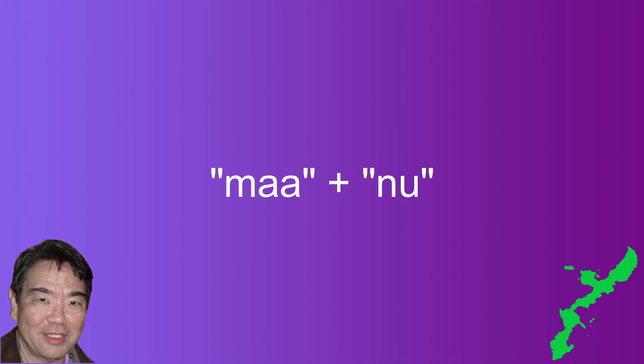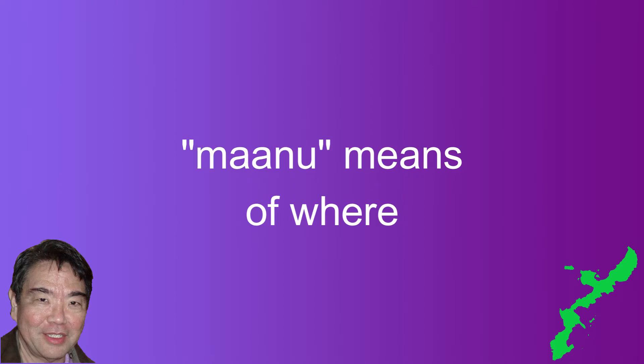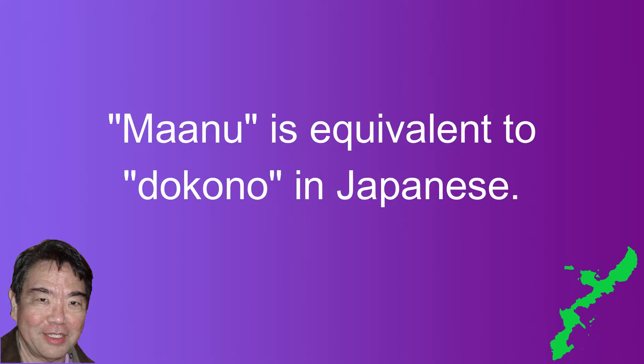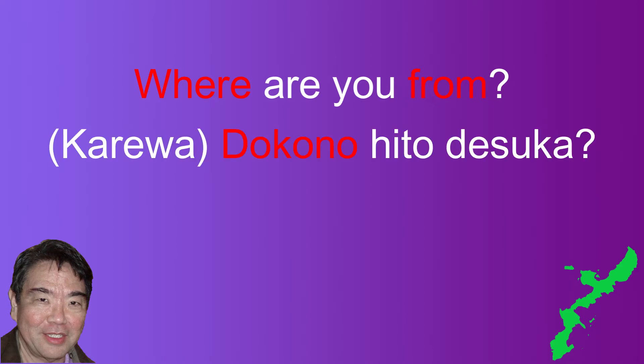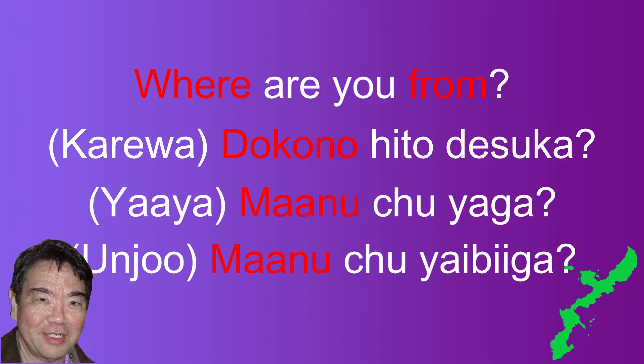The next example is "ma" used with the possessive particle "nu" that we covered in video 40. "Manu" means "of where," equivalent to Japanese "doko no." The example is "where are you from?" In Japanese: "kare wa doko no hito desu ka" — though more commonly "donata desu ka." In Uchinaguchi: "yaya manuchu ya ga" in casual form and "unjo manuchu yaibi ga" in polite form.